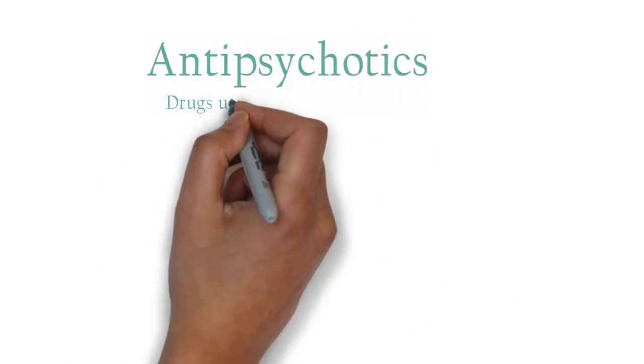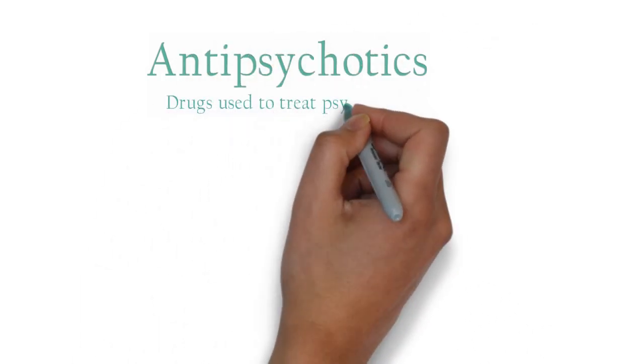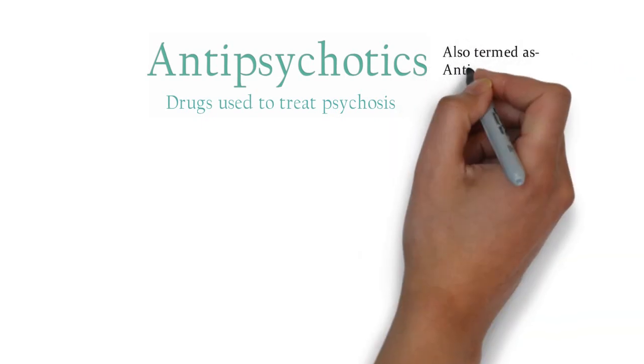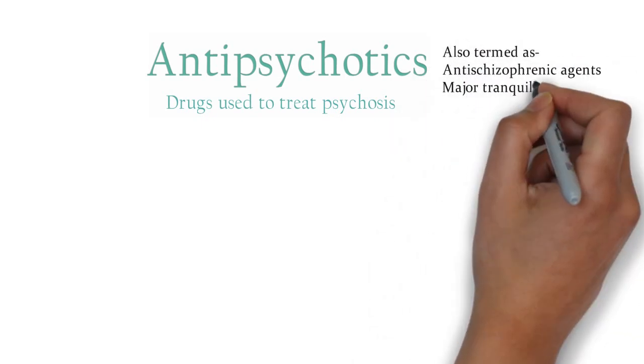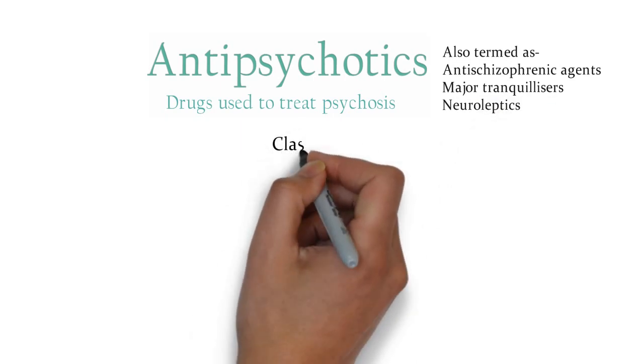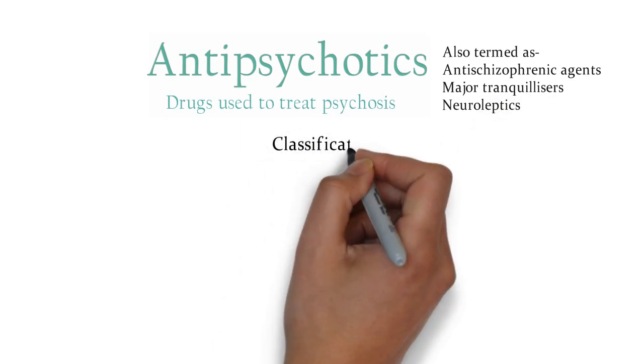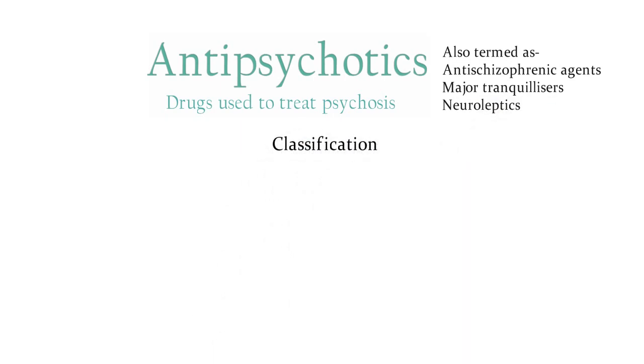Hello everyone. In this video we are going to study the antipsychotics — these are the drugs which are used in treatment of psychosis, that is schizophrenia. Therefore they are also called anti-schizophrenic drugs, major tranquilizers, or neuroleptics.